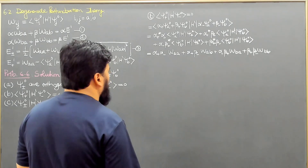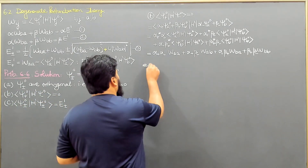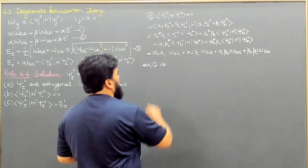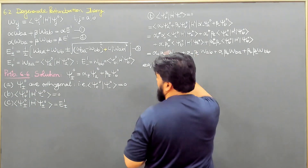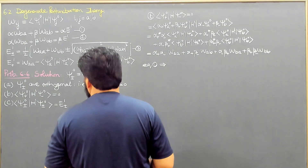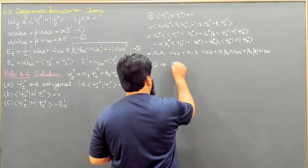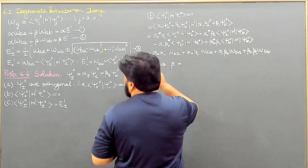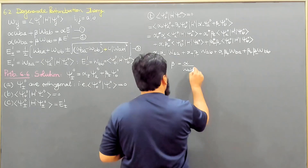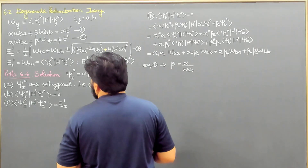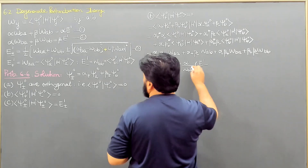Now from equation 1, we write β± in terms of α±. From equation 1, β = α · W_AB / (E₁ ∓ W_AA), where the ± signs apply to the respective states.